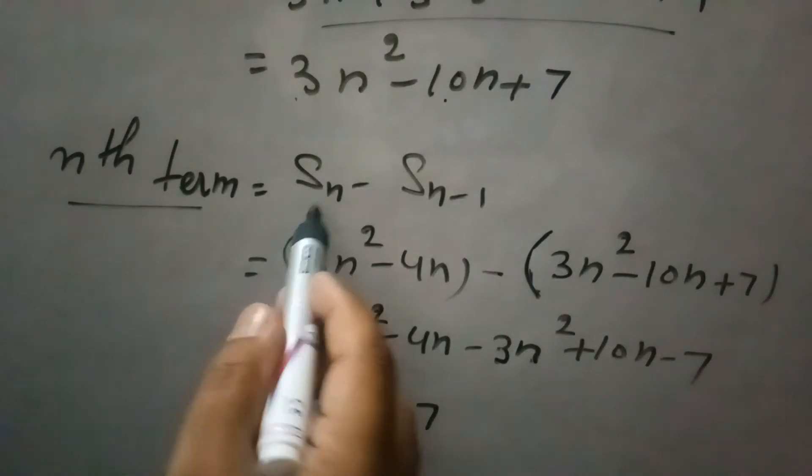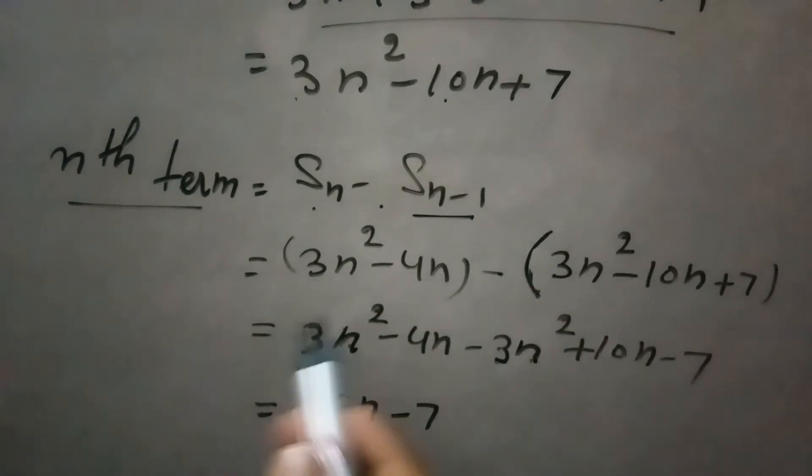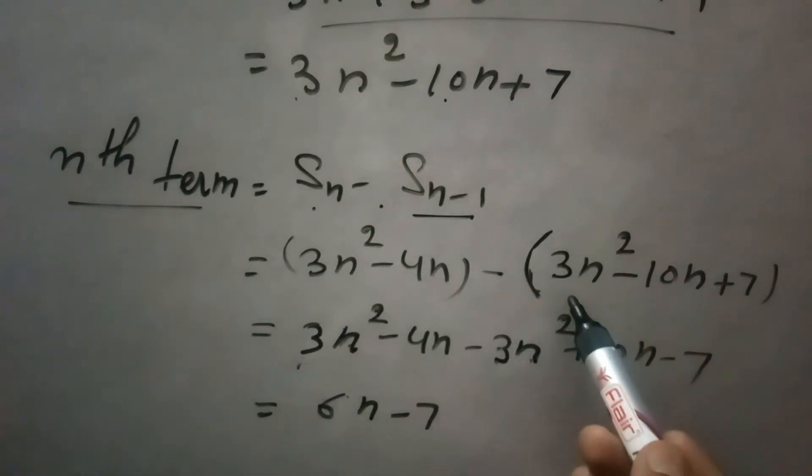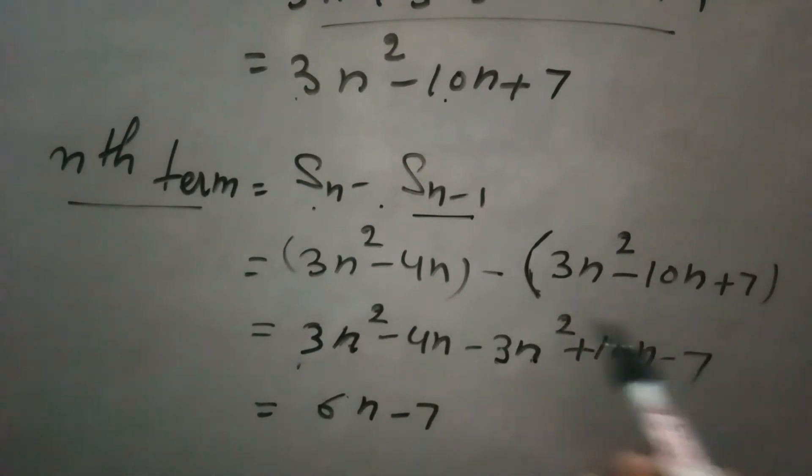Now nth term is Sn minus S(n-1). So Sn is 3n² minus 4n, and S(n-1) is 3n² minus 10n plus 7.